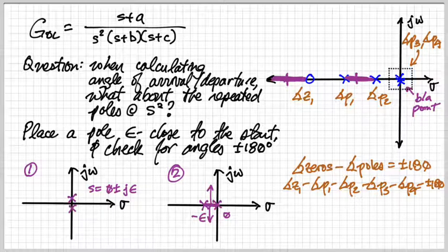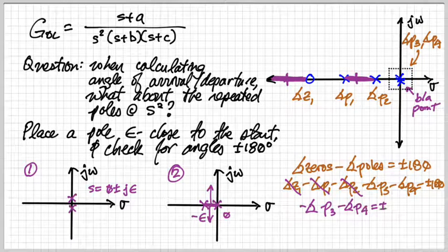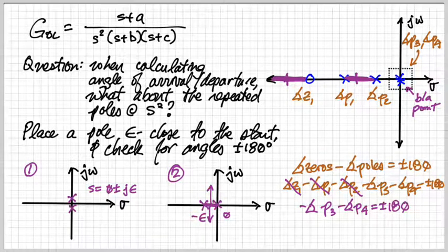Angle of zero one minus angle of pole one minus angle of pole two minus angle of pole three. The values for zero one, angle pole one and angle pole two will all be zero because they're all on the real axis and if epsilon is small enough you're still going to end up with a value of zero. We're left then with minus p3 minus the angle of p3 minus the angle of p4 equals plus or minus 180 degrees.